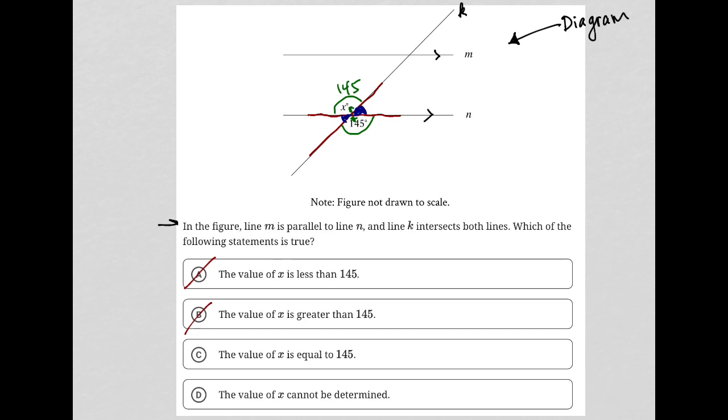Choice c, the value of x is equal to 145. Absolutely yes. Right, so I've already explained why. Again, the term is vertical angles. You can definitely look that up if you want some more practice with it. But that is the answer.